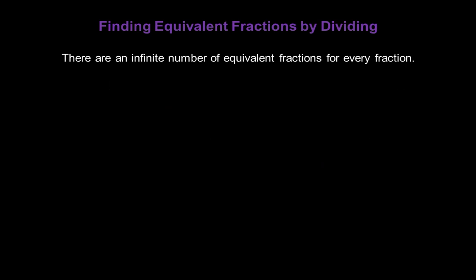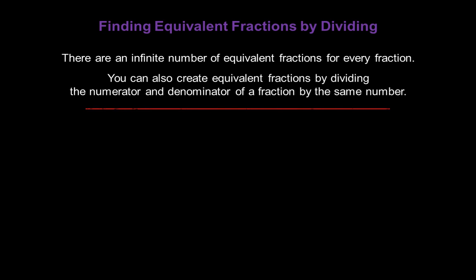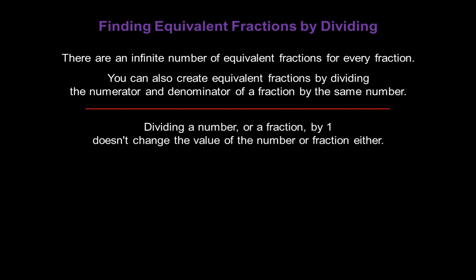Now, there are an infinite number of equivalent fractions for every fraction. We already multiplied top and bottom by the same number, but you can also create equivalent fractions by dividing the numerator and denominator of a fraction by the same number. Dividing a number or a fraction by one doesn't change the value of the number or fraction either, just as multiplying didn't. Eighteen divided by one still gives us eighteen, and if we take one half and divide it by one, we still get one half.